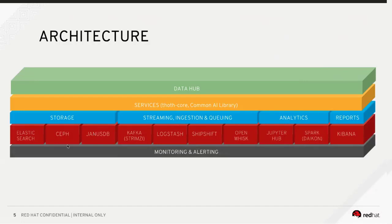From an architecture perspective, this is where we get into using the Data Hub as a reference architecture. At the core of the Data Hub, on the left side, we use Ceph Object Store. We use that similarly to how you would use S3 in Amazon's infrastructure — that is our data lake. We have lots of different types of data stored there: data from Red Hat Cloud Services, metric data coming in from Prometheus, more operational data, and basic customer information like support tickets and feedback loops.